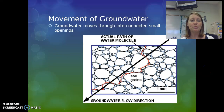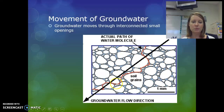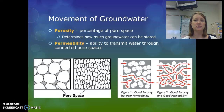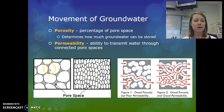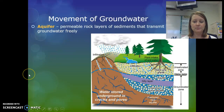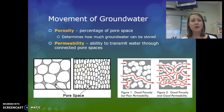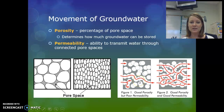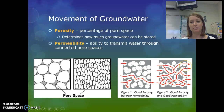Groundwater moves through small openings in rocks or sediments called pore space. Porosity describes the percentage of pore space in the soil — a higher porosity means it can hold more water. Permeability is how easily water can travel through those pore spaces. Even if a soil or rock has good porosity, that doesn't necessarily mean it has good permeability. If water cannot travel through a soil or rock, we say that it is impermeable.